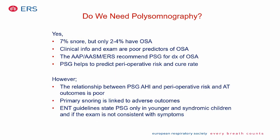Do we need polysomnography? Yes, because 7% of children snore and we need to differentiate those with OSA. Clinical information and exam are poor predictors. Most societies including the European Respiratory Society recommend polysomnography, and it can help predict perioperative risk and cure rate. Primary snoring may also have adverse outcomes such as higher blood pressures and academic difficulties. ENT guidelines recommend polysomnography mainly for younger children with syndromes or when exam is inconsistent with symptoms.